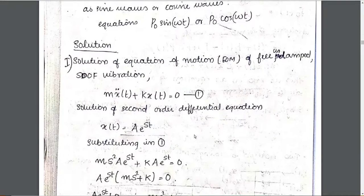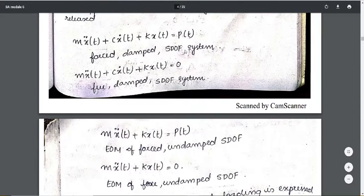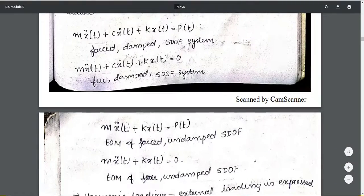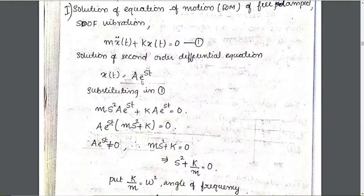Now let's go to the solution of the equation of motion for the free undamped SDOF system. There is no C (damping) component. We solve m·x-double-dot(t) + k·x(t) = 0. Because this is free undamped motion, we solve this second-order differential equation. The assumed solution is x = A·e^(st).